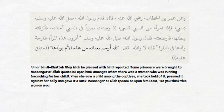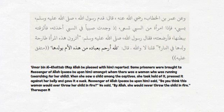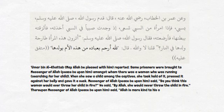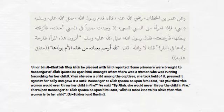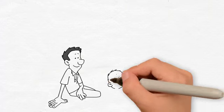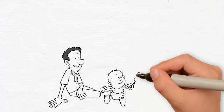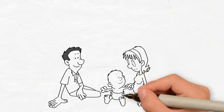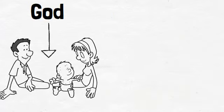The Messenger of Allah said: 'Do you think this woman would ever throw her child in fire?' We said, 'By Allah, she would never throw the child in fire.' Thereupon, the Messenger of Allah said: 'Allah is more kind to His slave than this woman is to her child.' Here, we see the Prophet Muhammad, peace be upon him, drawing resemblance between the mercy of a mother towards her child and the mercy of God towards His creation.